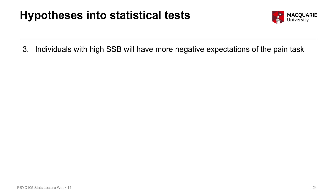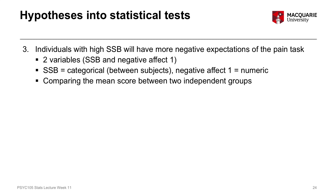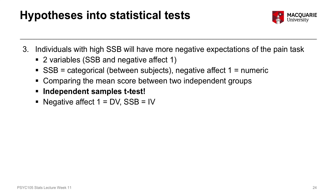Hypothesis three investigates whether individuals with a high somatic symptom burden will have more negative expectations of the pain task — a difference in expectations between those with high versus low somatic symptom burden. We have two variables: somatic symptom burden (a between-subjects categorical variable) and negative affect one (a numeric variable). Because we want to compare the mean negative affect score between two independent groups, we'll use an independent samples t-test, with negative affect one as the dependent variable and somatic symptom burden as the independent variable.